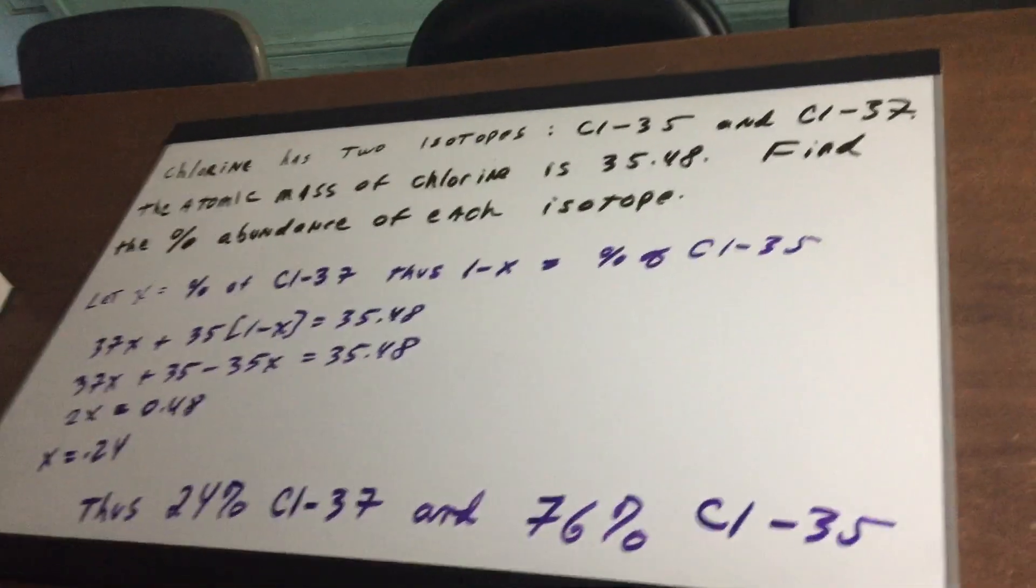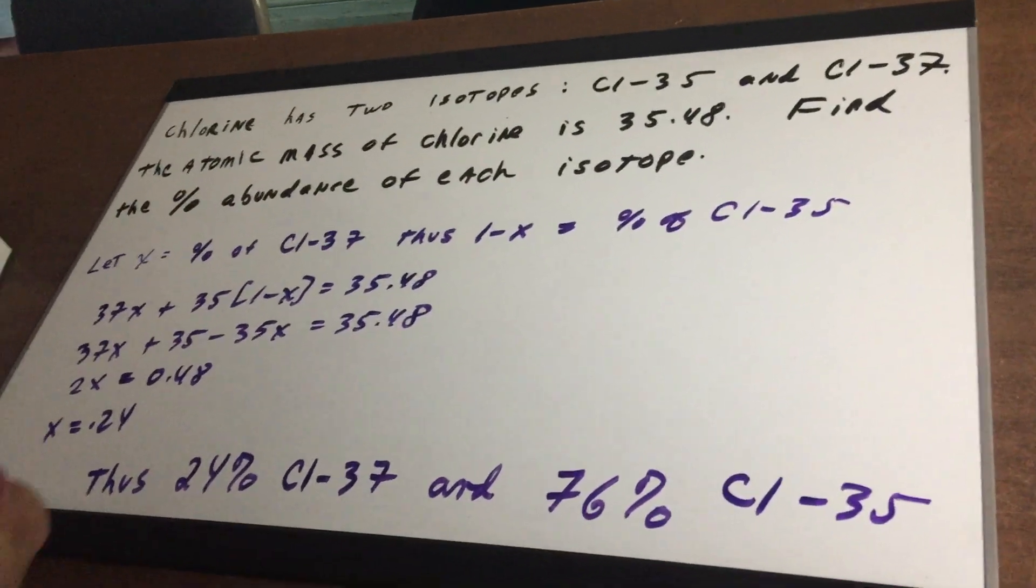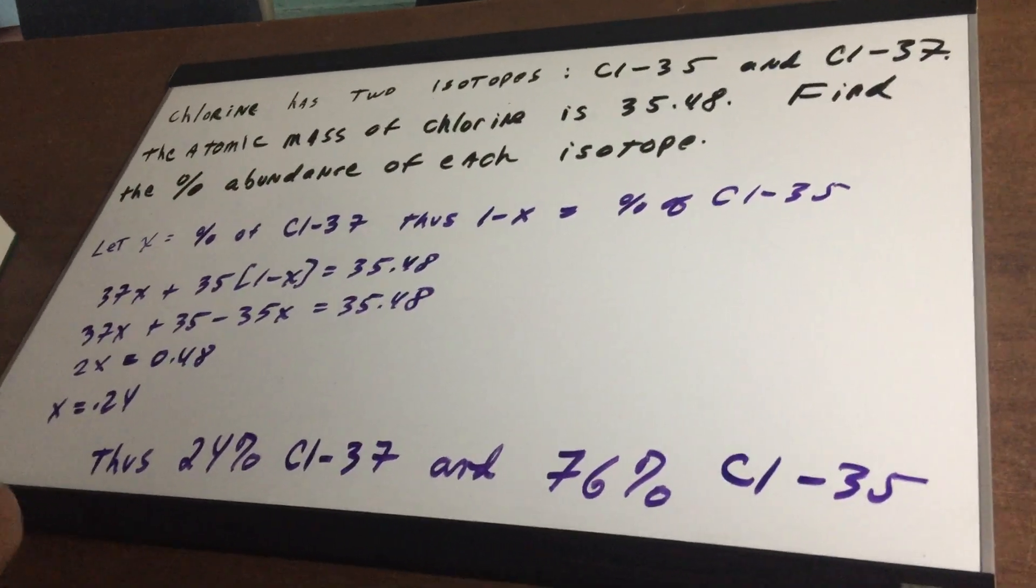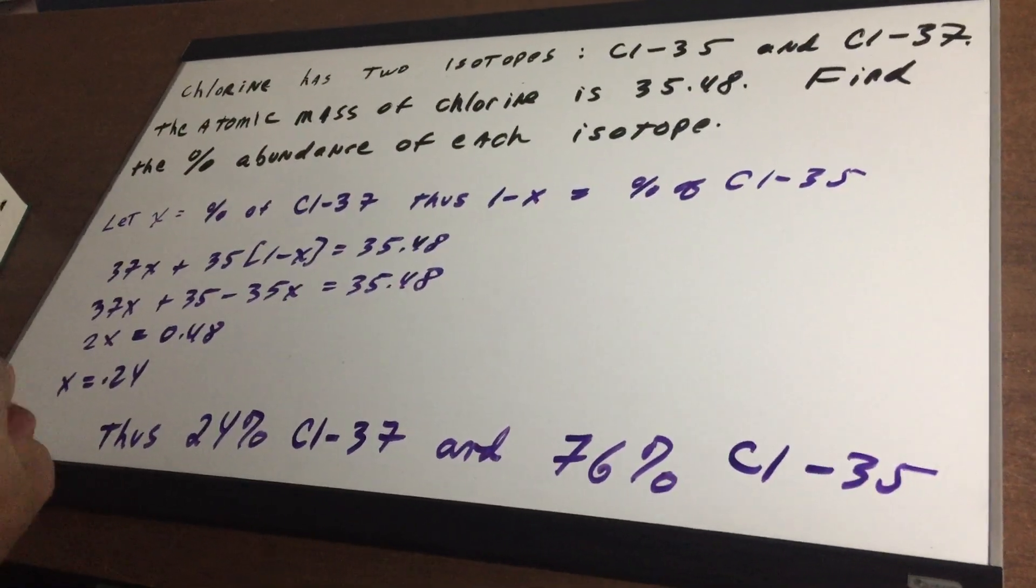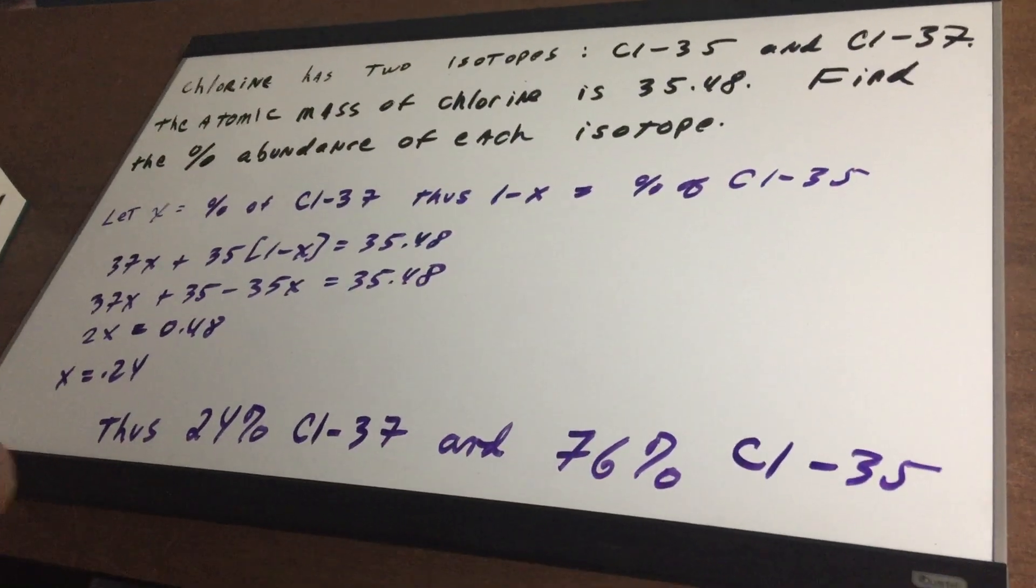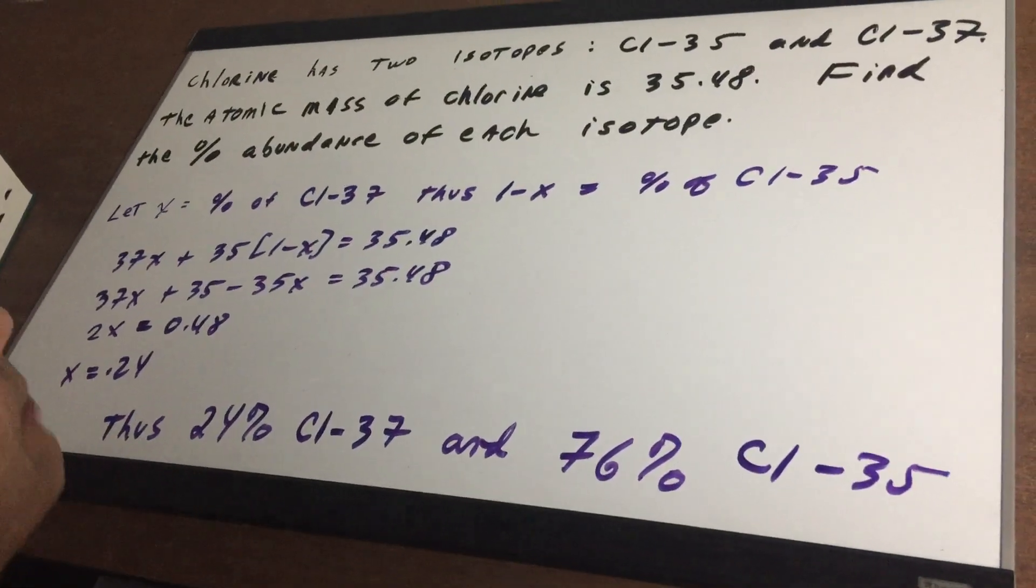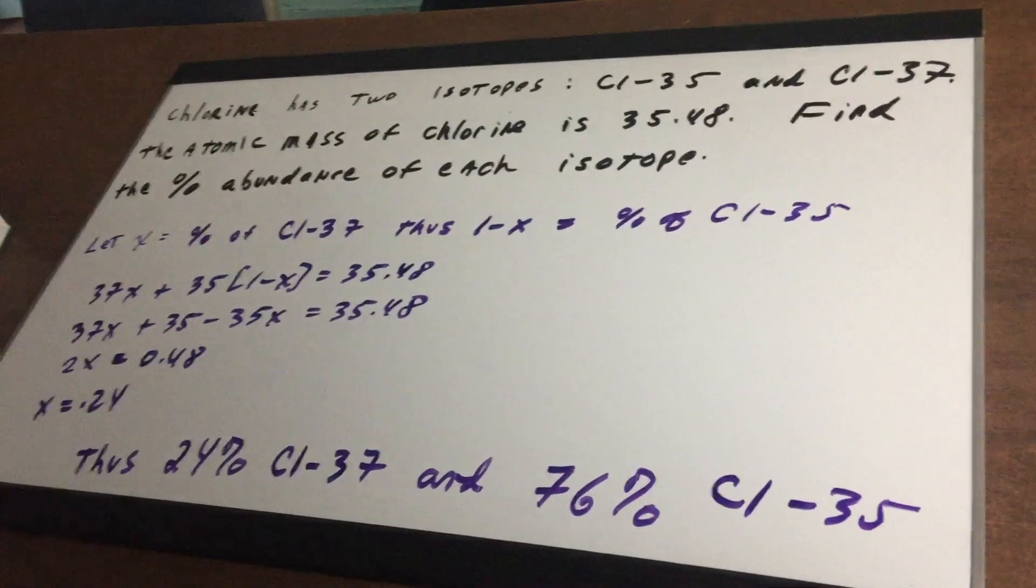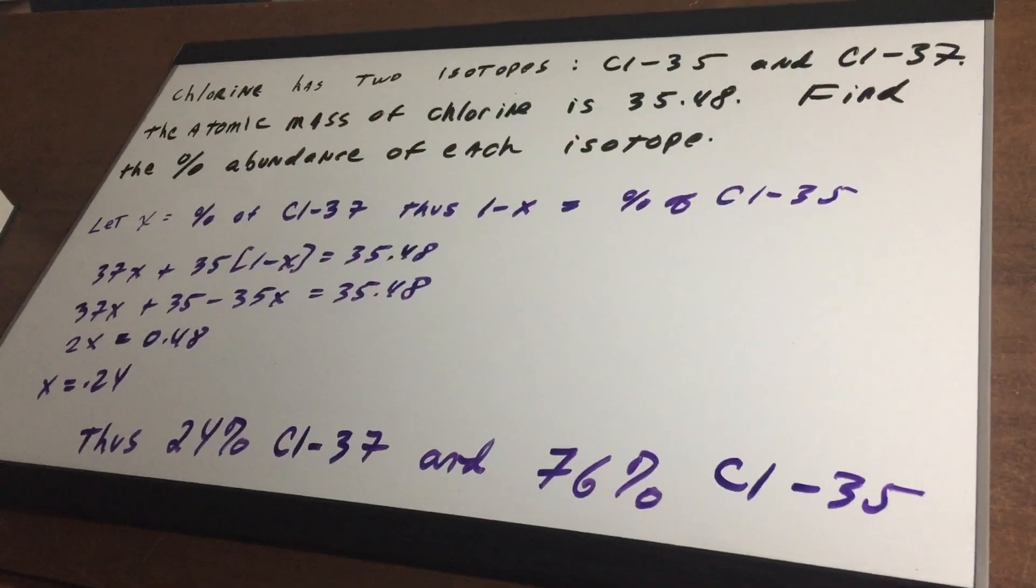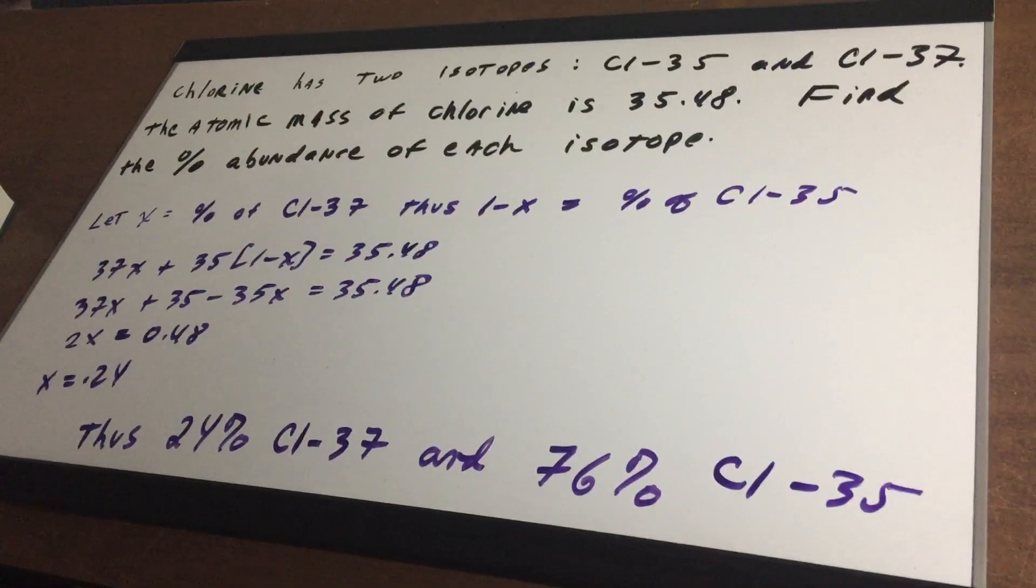Whenever you have an isotope, you want to remember it's atoms of the same element, but they're going to have different masses. The masses are different because they have different number of neutrons, but remember the atomic number, which is the number of protons, never changes. So in an isotope, they have different number of neutrons and consequently the masses are different.